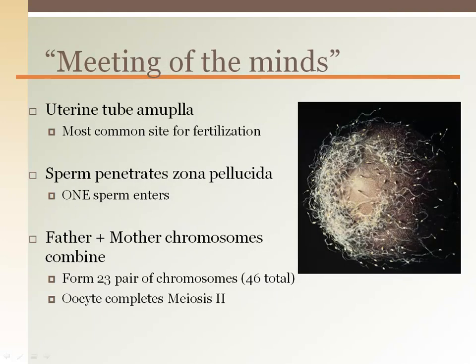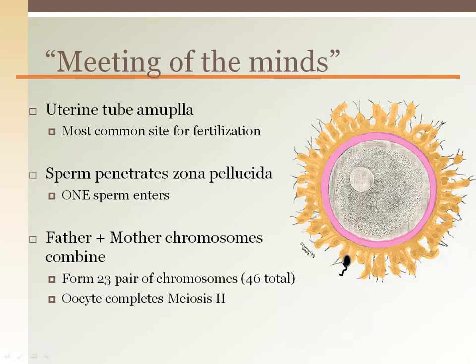The most common place for fertilization to occur is the ampulla of the uterine tube. Once the head of a single sperm cell penetrates the egg, the zona pellucida undergoes changes so no more sperm can enter. If more than one sperm enters, the process is aborted and will not become fertilized.